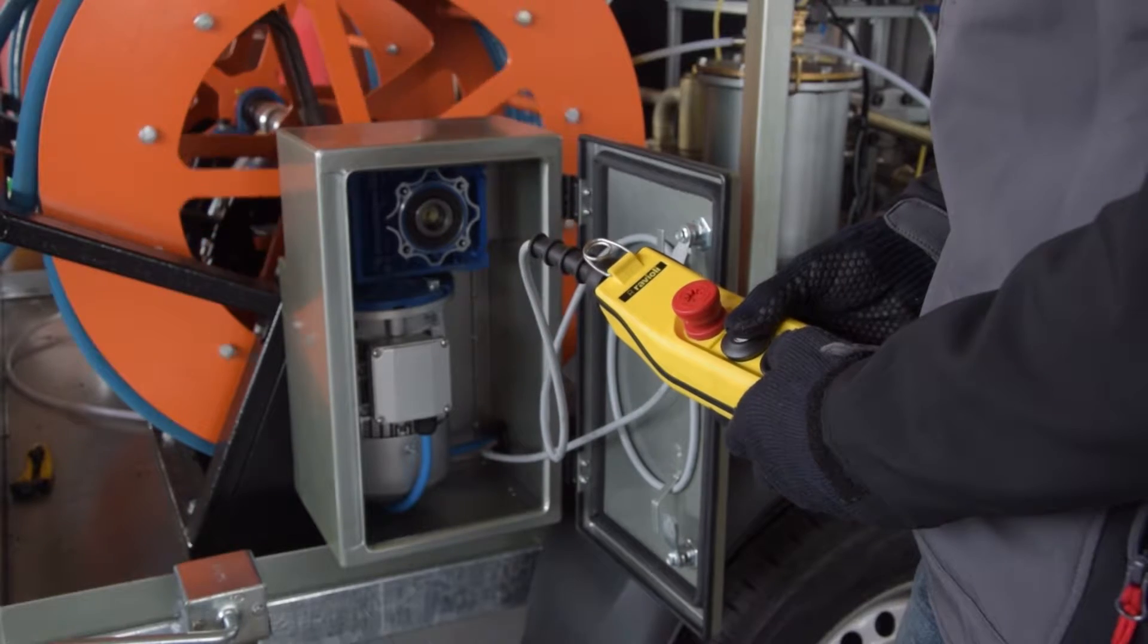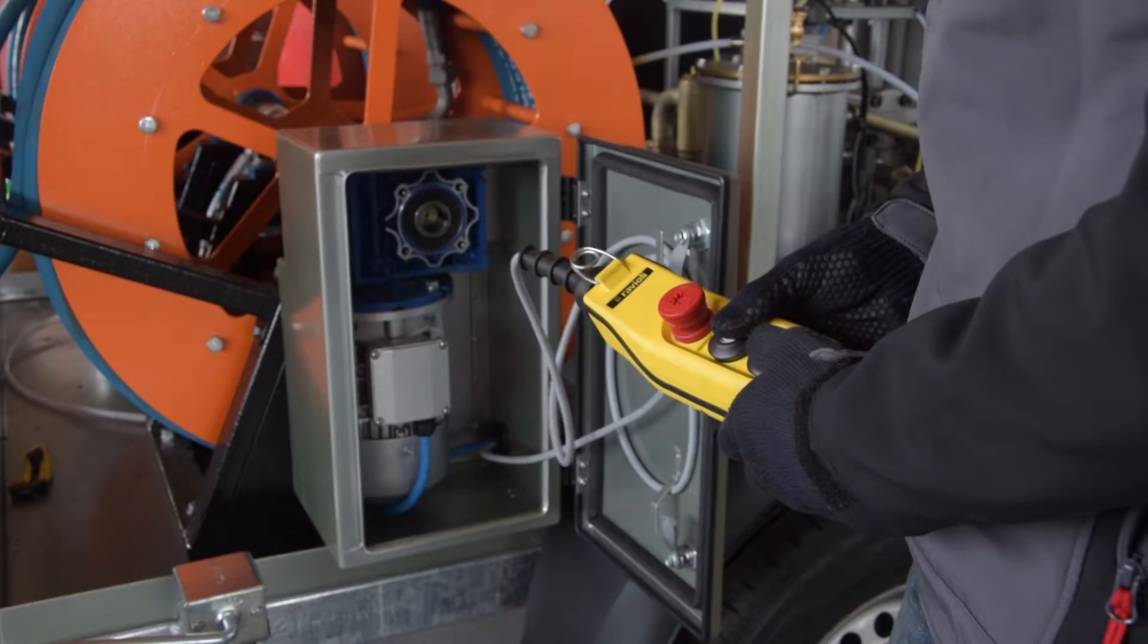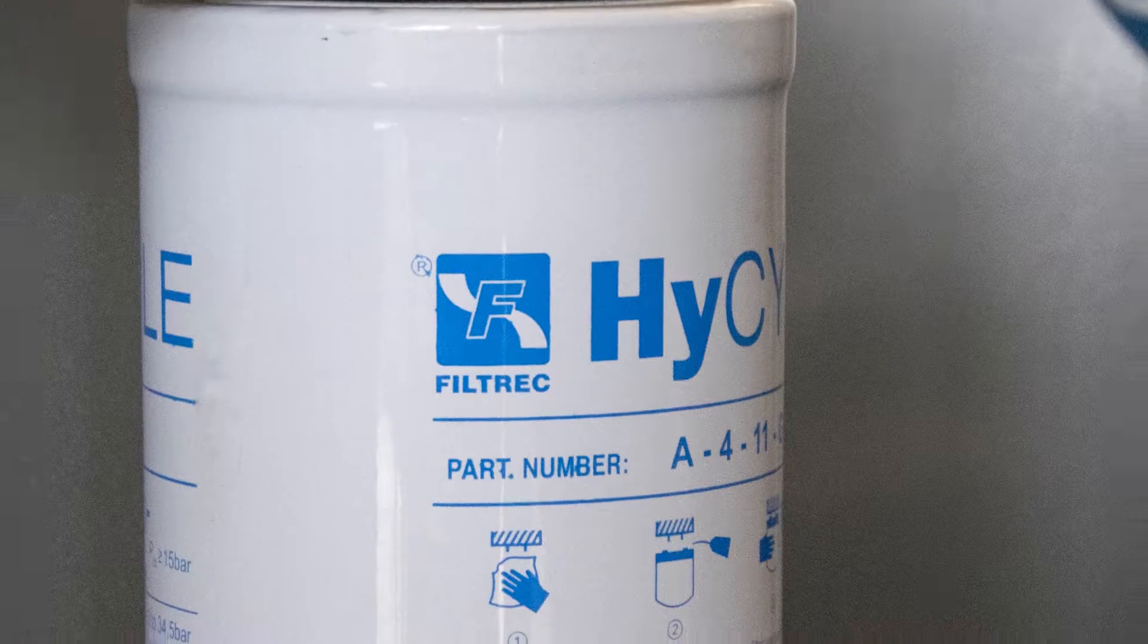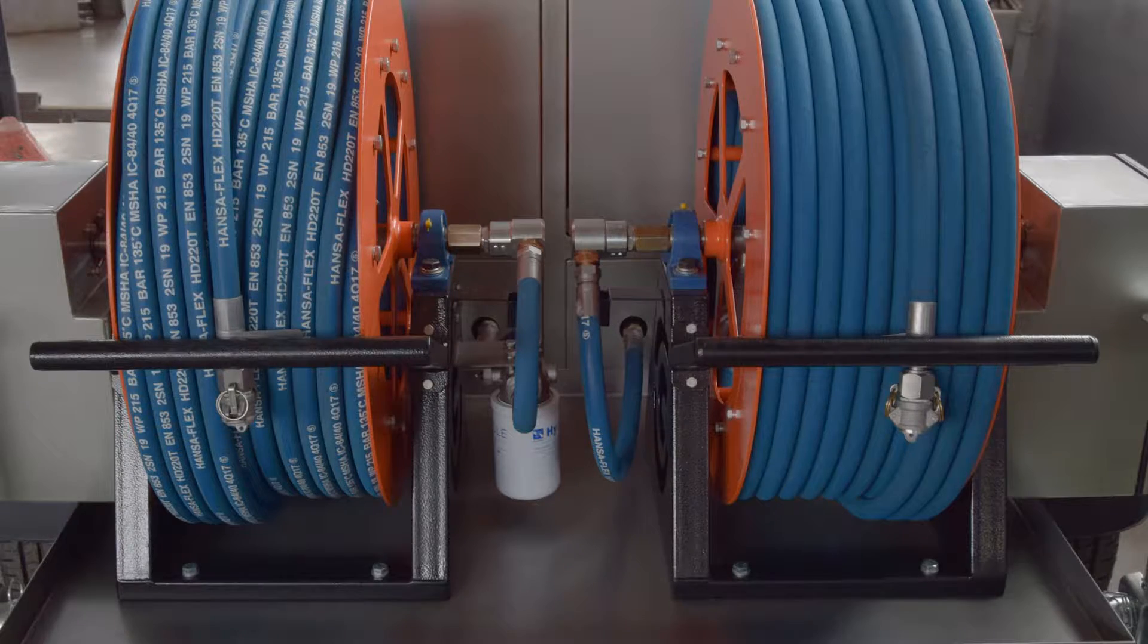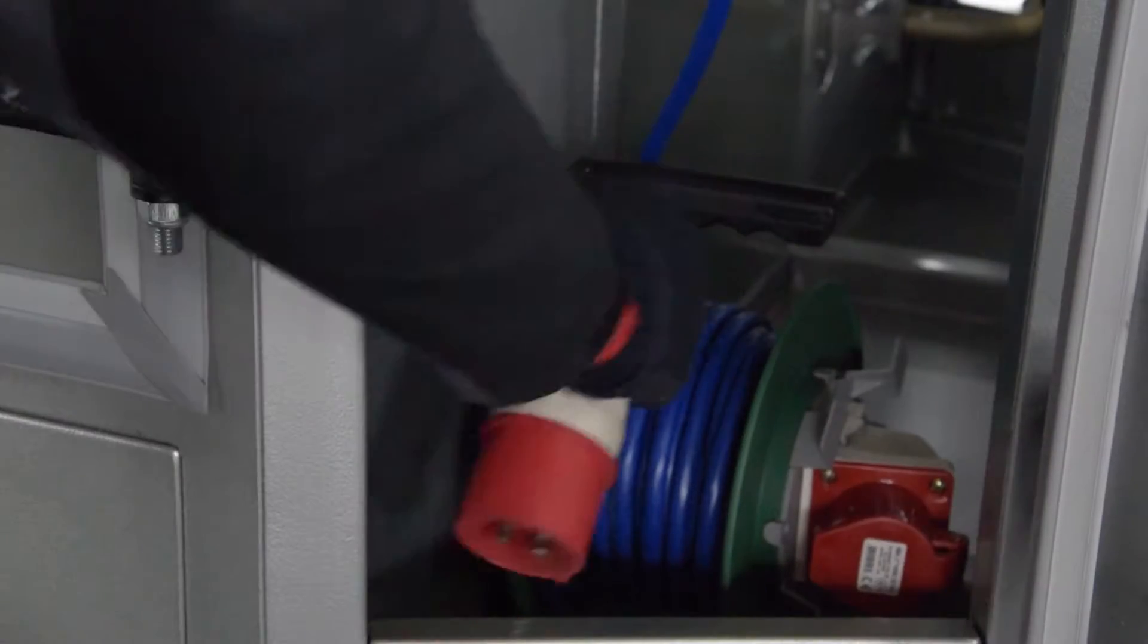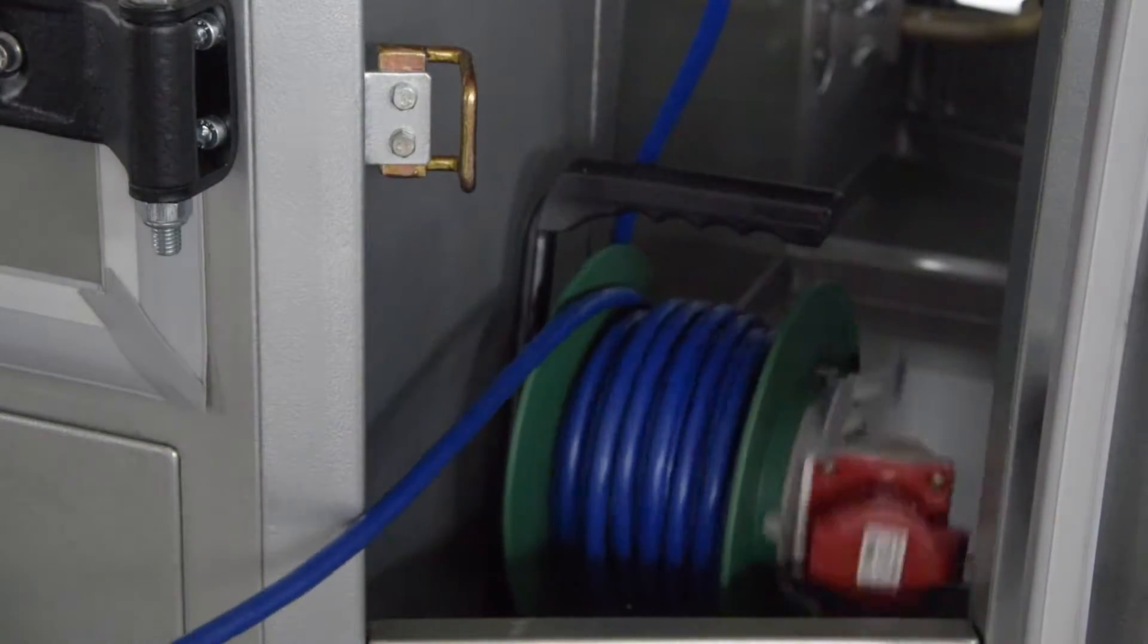The hose reel drums are equipped with an automatic drive for quick hose rewinding. For filling with new oil, the system is provided with an additional filter of 15 micron. The unit is connected to an outside power supply.